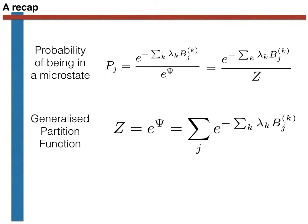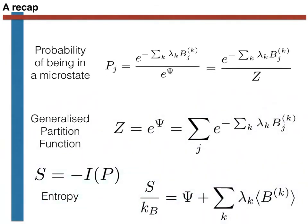The last thing we did was to note that the value of the entropy was equal to minus the value of the information for the distribution. By inserting the expression for the probability into the expression for the information, we thus arrived at the formula for the entropy of a thermodynamic state.